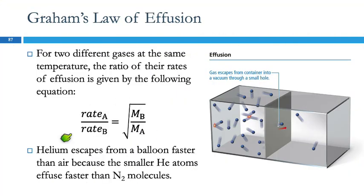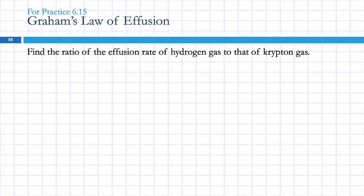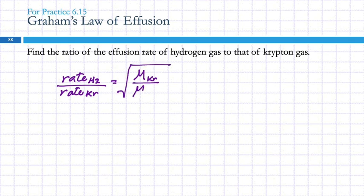So we're using this equation. The rate of A over rate of B is equal to the square root of the molar mass of B over the molar mass of A. That means that the rate of hydrogen to the rate of krypton will equal the square root of the molar mass of krypton to hydrogen. This is not going to allow us to calculate the actual velocity or rate, but we can compare the two gases.